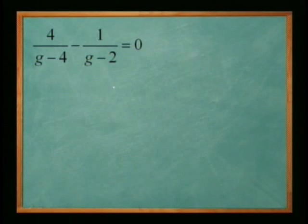Alright, so let's take a look at this problem here. We want to solve for g, but you notice that g is in the denominator of the fractions. In order to solve for that g, we need to move it up to the numerator. To do that you need to multiply by the common denominator to get rid of the fractions.